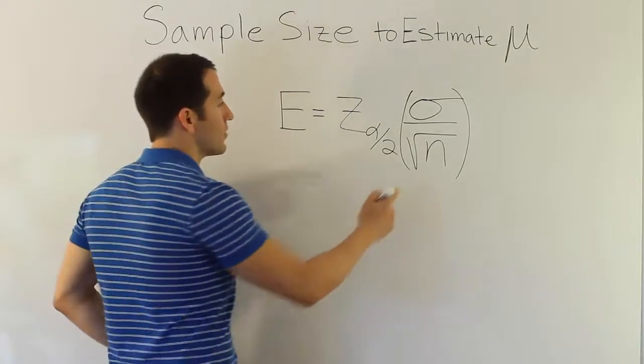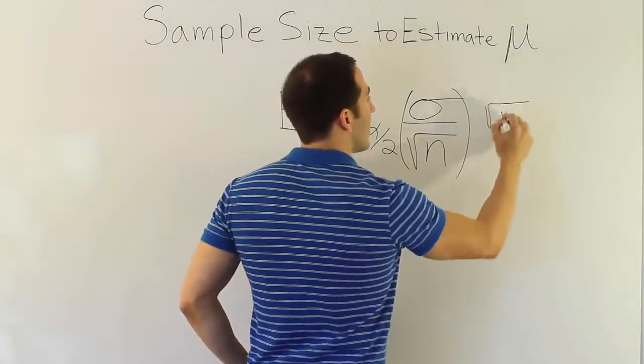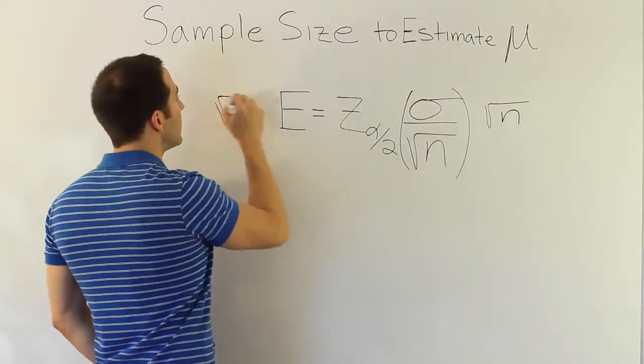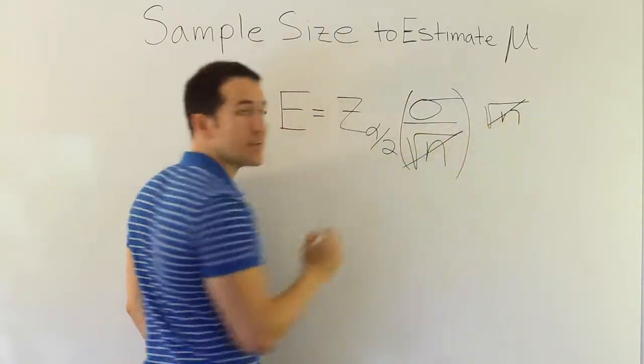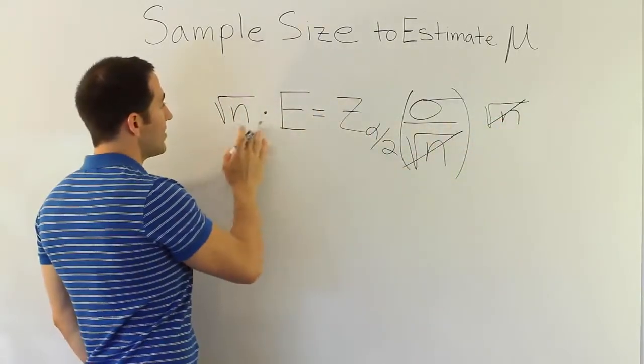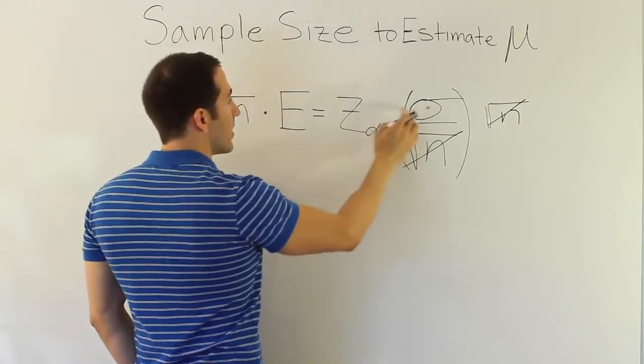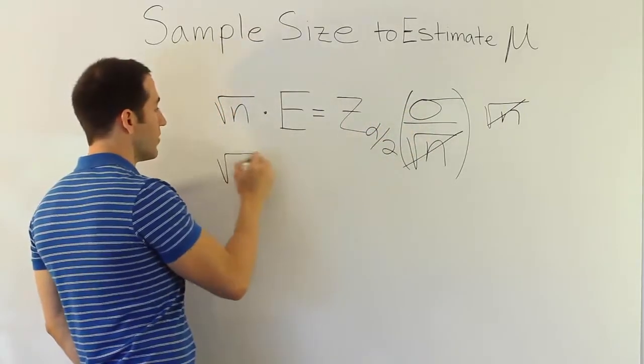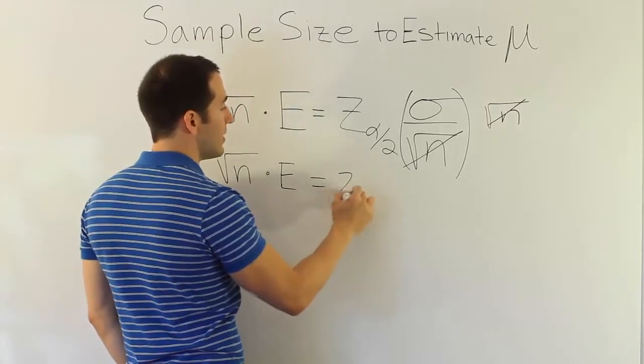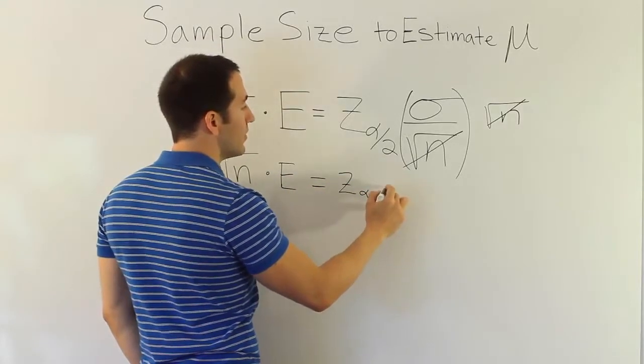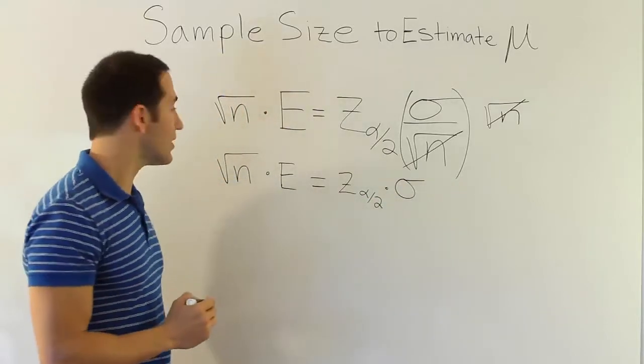We're going to take the square root of n here and multiply it by both sides. And what that will do, of course, is cancel out this quantity from both sides, right? So now we'll have n times e is equal to z alpha divided by 2 times sigma. So the square root of n times e is equal to z alpha divided by 2 times sigma, the population standard deviation.